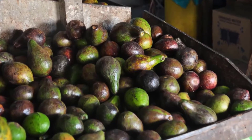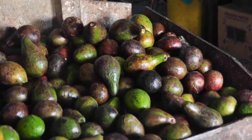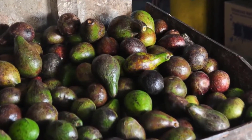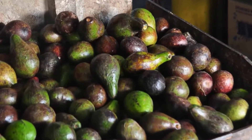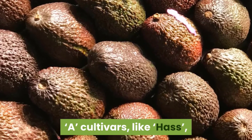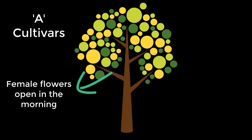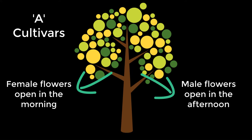Avocado cultivars are classified according to which of the sexual phases is active in the morning or afternoon. A cultivars, like Hass, have female flowers open during the morning. These flowers close and reopen again the following afternoon in their male phase.